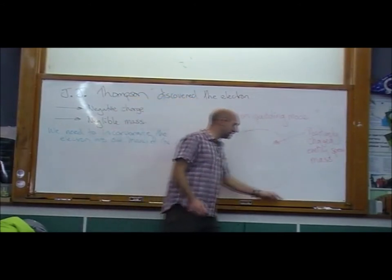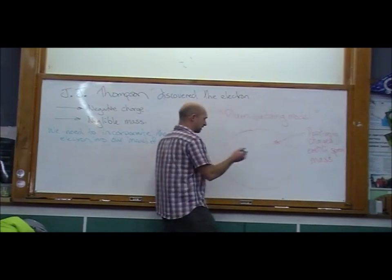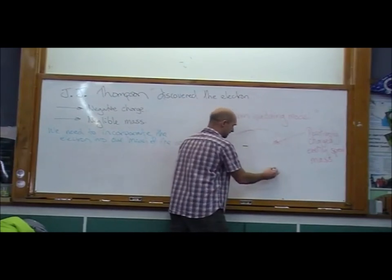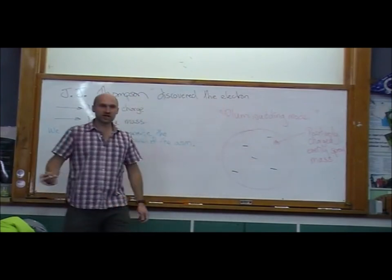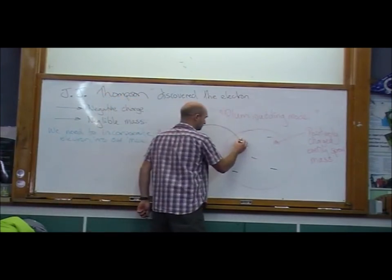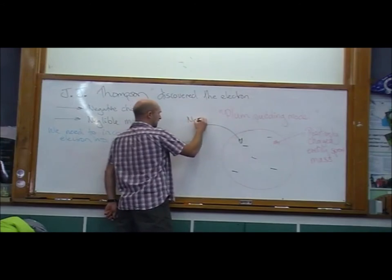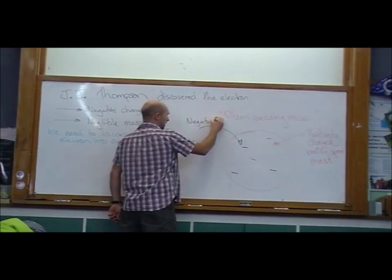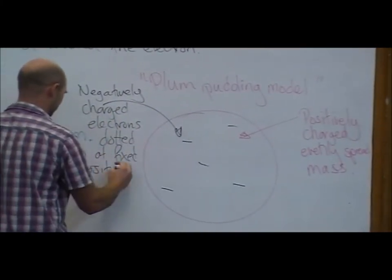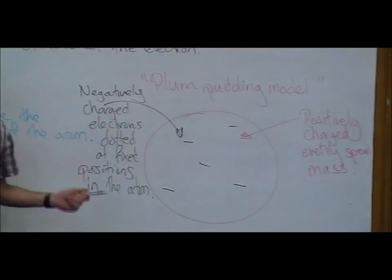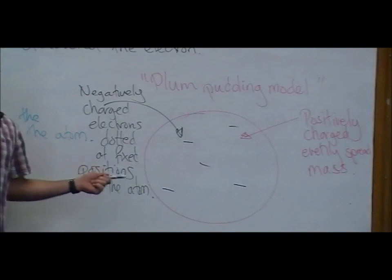And then how do we account for the electrons? They are like the raisins inside the bun. So in J.J.'s model of the atom, we had negatively charged electrons. Key thing, dotted at fixed positions inside the atom.